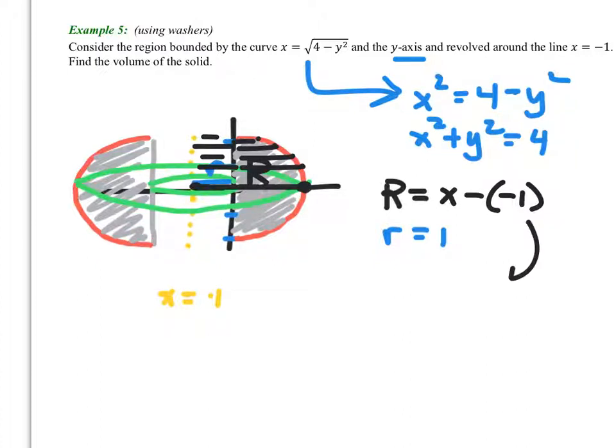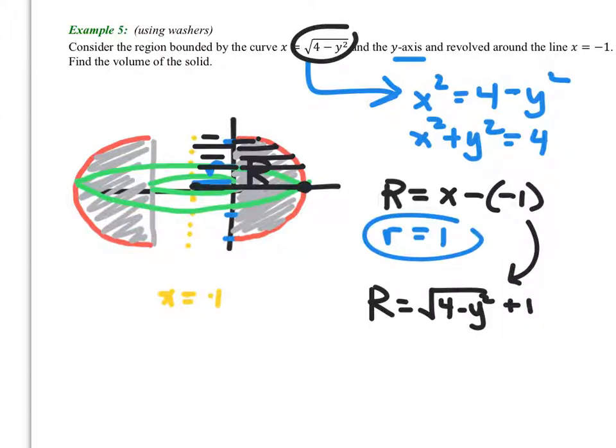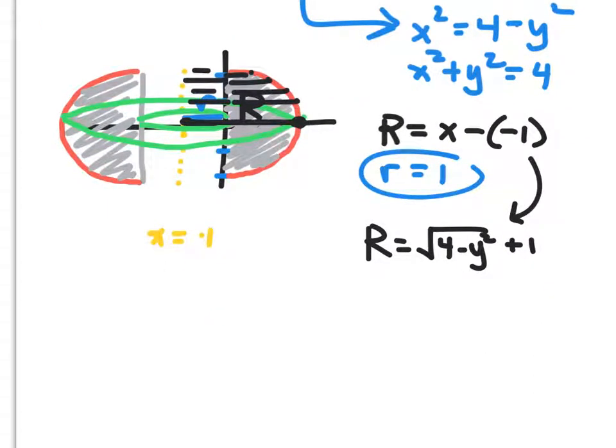Okay, so what is big R then? Let's come up with the formula for it. Big R, of course, if this is x, would be the square root of 4 minus y squared minus a negative 1. So we would say plus 1. So that would be big R. Little r, like we said, would always be 1. So we can construct our integral.